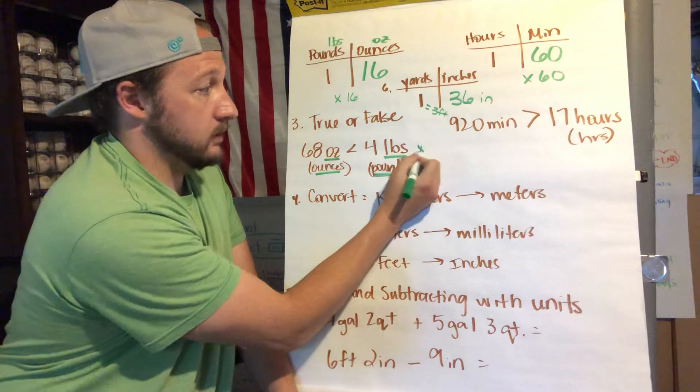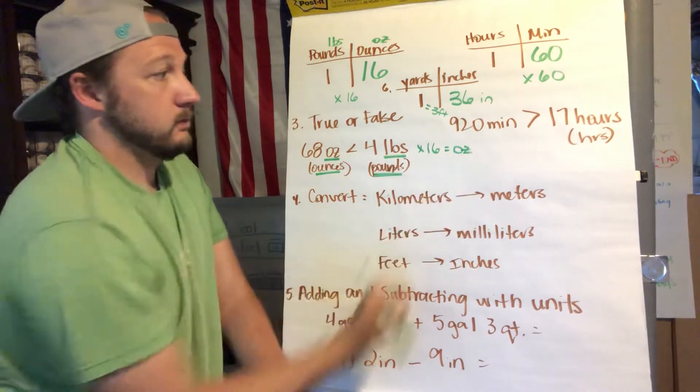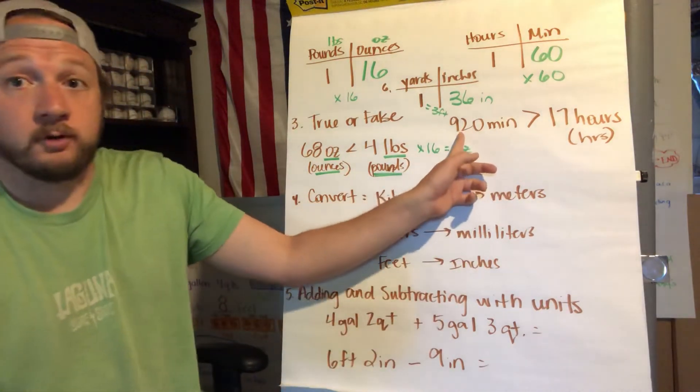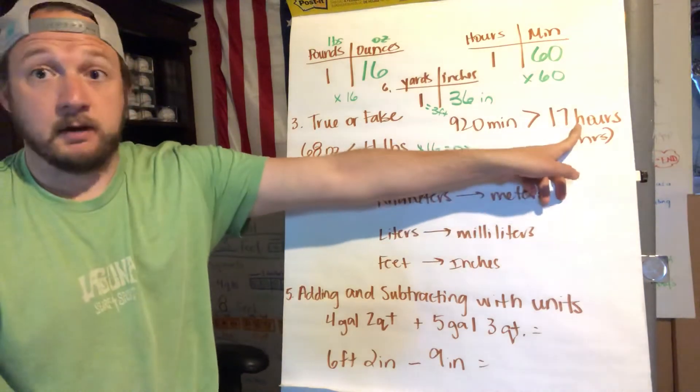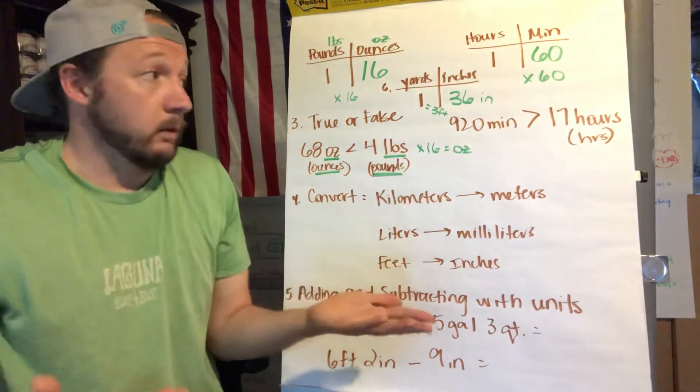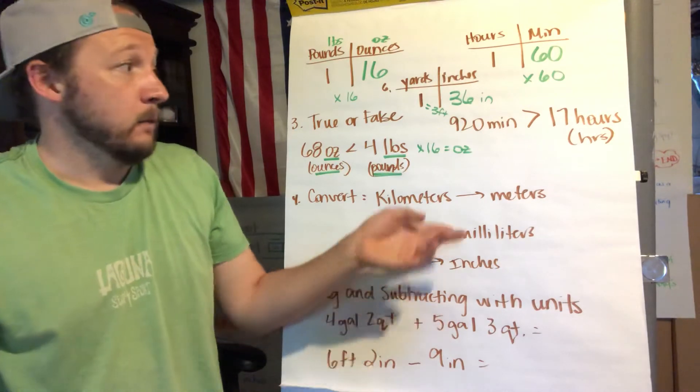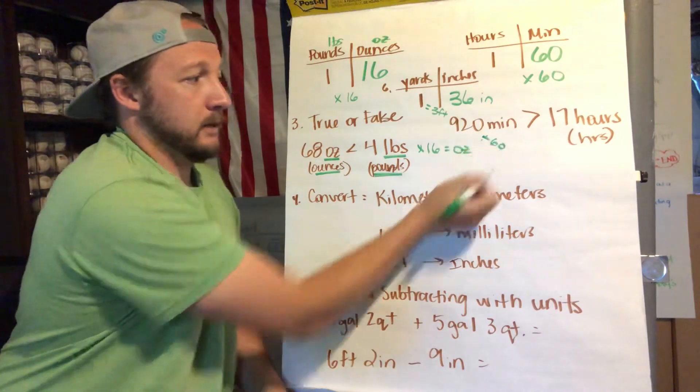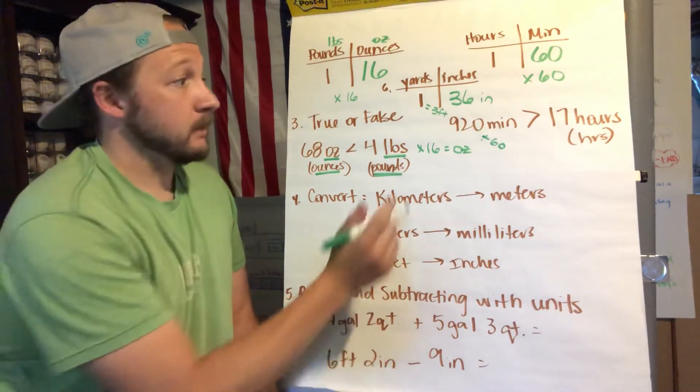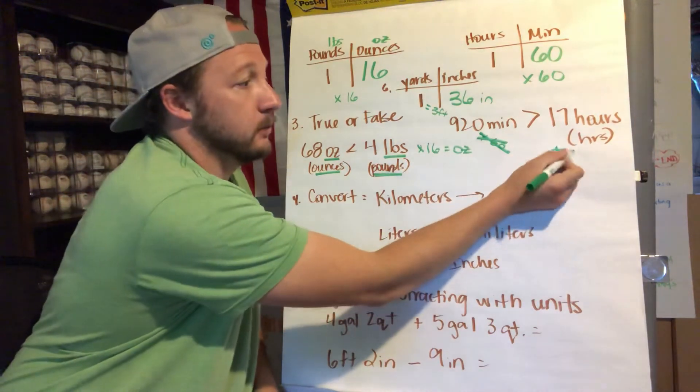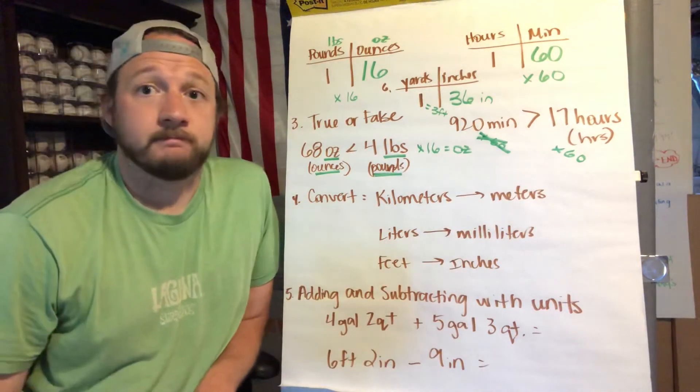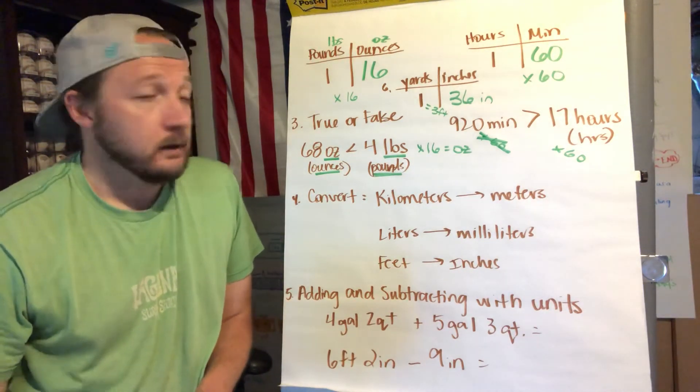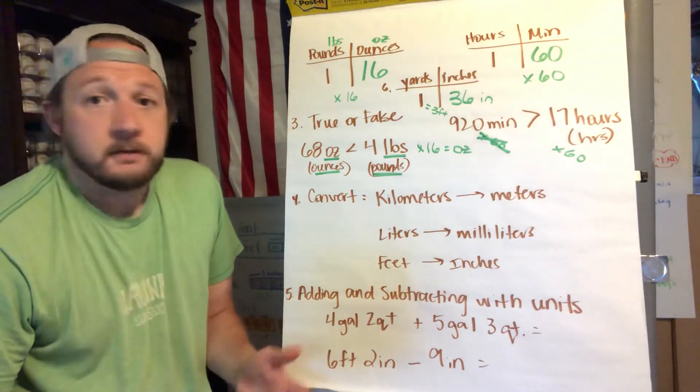You can't just blindly pick one without converting it. So in this case you would either have to convert the ounces to pounds or the pounds to ounces. If it was me, I would convert from pounds to ounces because I would rather multiply than divide. So four pounds times 16, here's your ounces, easy peasy. Then over here, 920 minutes is greater than 17 hours.